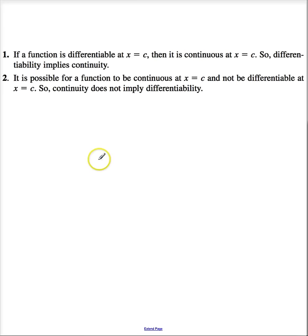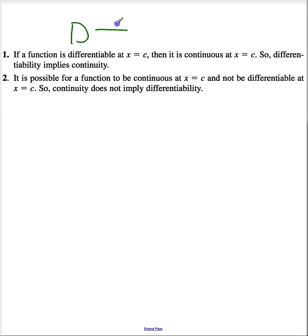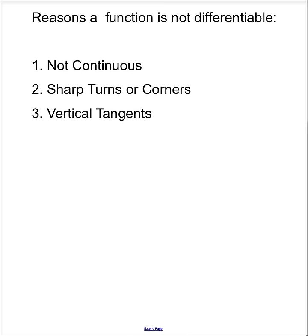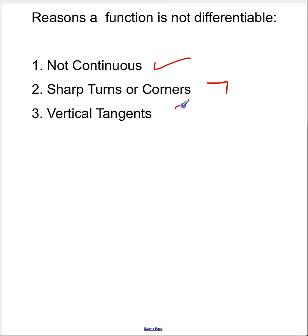If a function is differentiable at x equals c, that does mean it is also continuous at x equals c. However, just because a function is continuous, that does not mean it is differentiable. Let's look at some reasons why a function might not be differentiable. If it's not continuous, then it's not differentiable. If it has sharp turns or corners, it's not differentiable. And if it has vertical tangents, it's not differentiable.